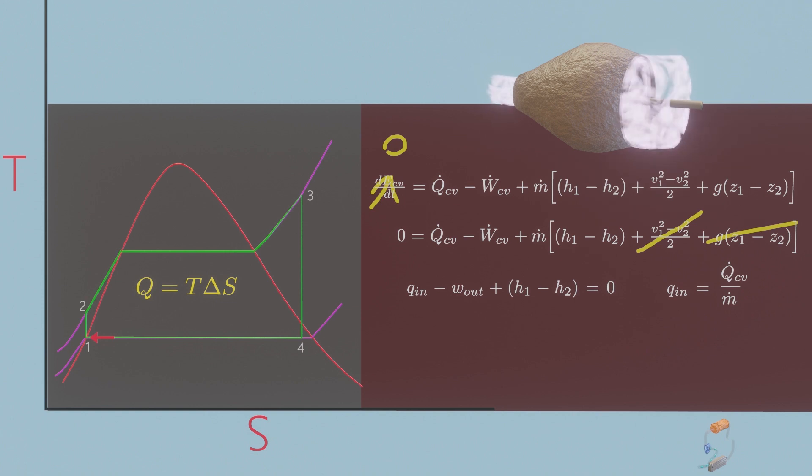The turbine is assumed to be isentropic, which means zero heat. Therefore the work done by turbine is h₃ minus h₄. The pump is also isentropic, and the work done is negative, so work is h₂ minus h₁.